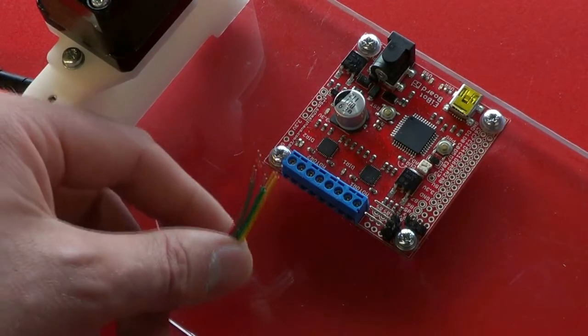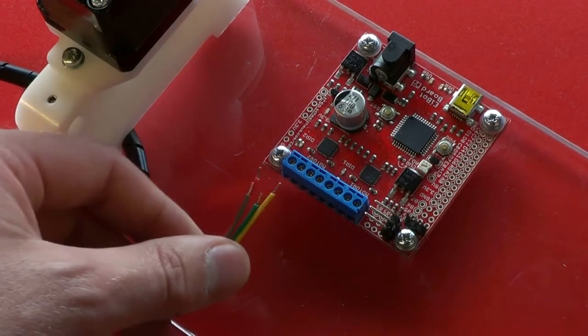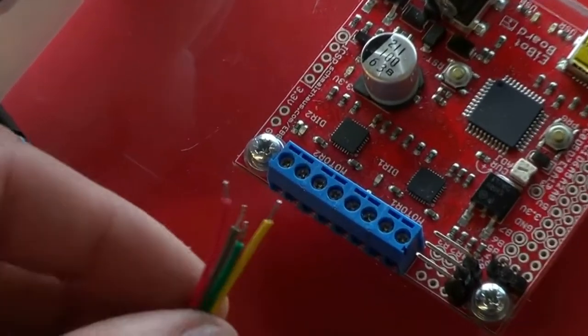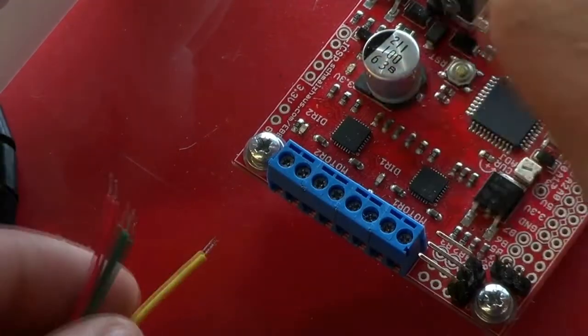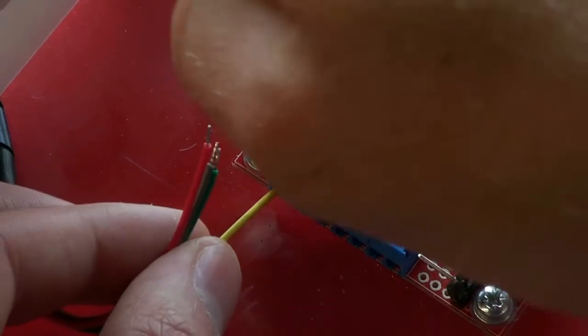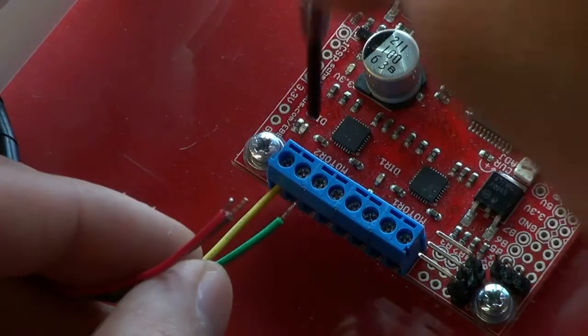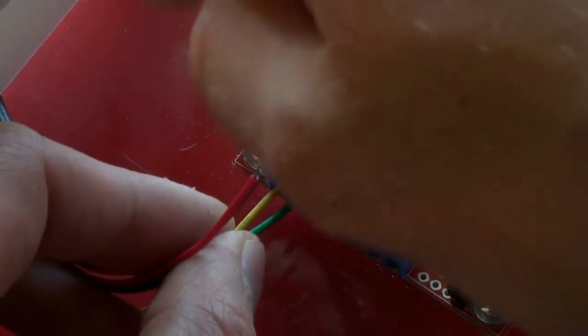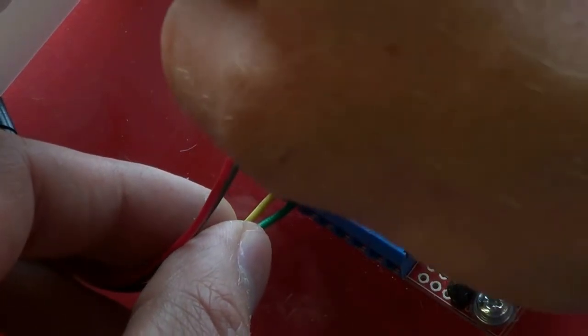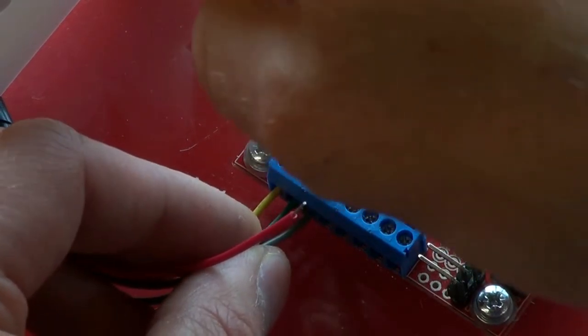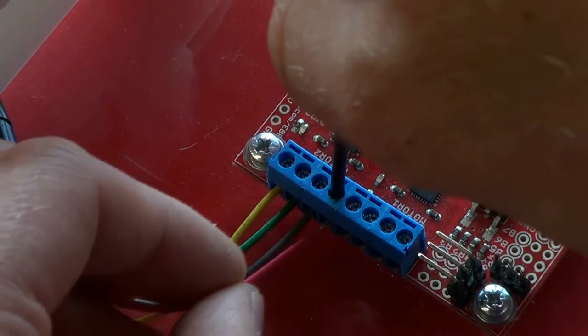Starting at the extreme left of the terminal block, we're going to connect first the yellow lead, then the green, then grey, and finally red.